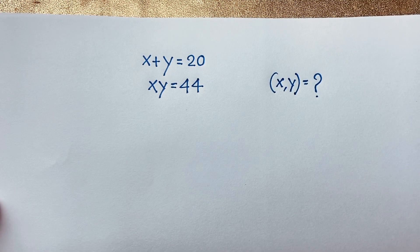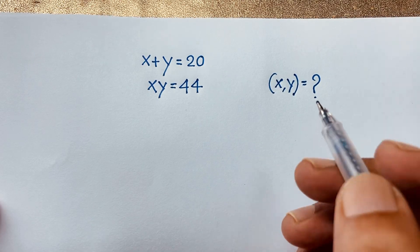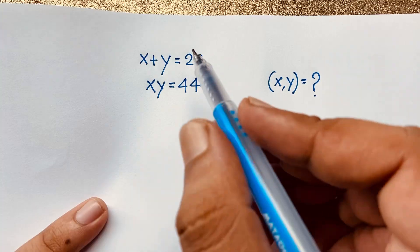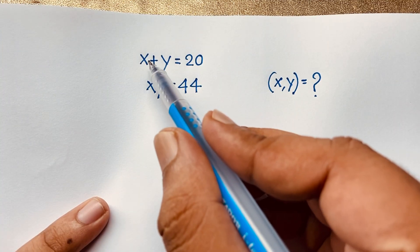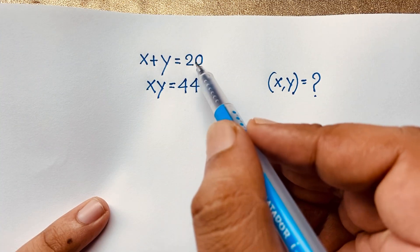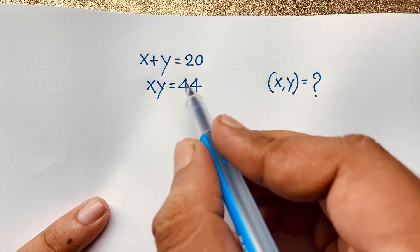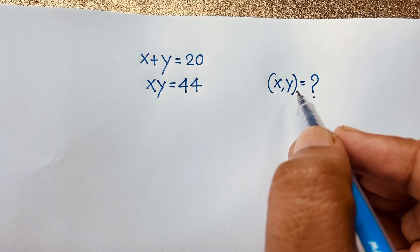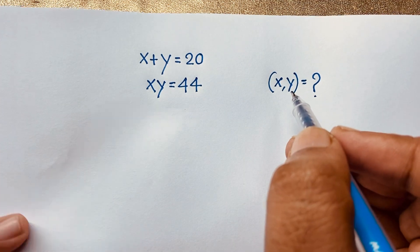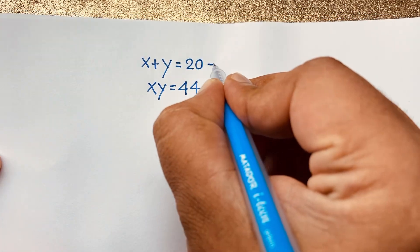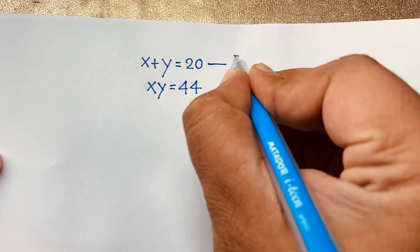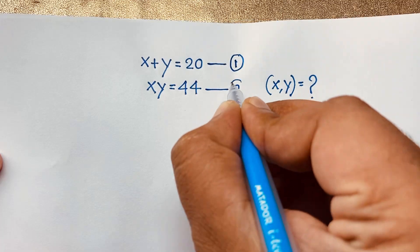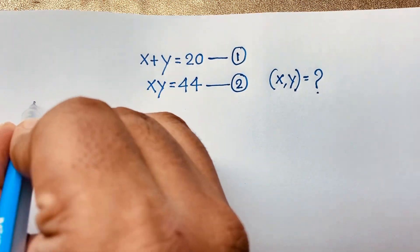Hello everyone, welcome to the classroom. Today we have solved a nice math olympiad question: x plus y is equal to 20, xy is equal to 44. Find x and y. This is our first equation and this is our second equation — let's find the solution.